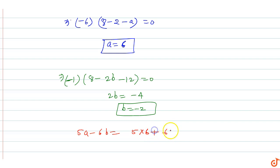That's 5×6 = 30, and 6×2 = 12, so 30+12 = 42. Therefore 5a-6b equals 42.